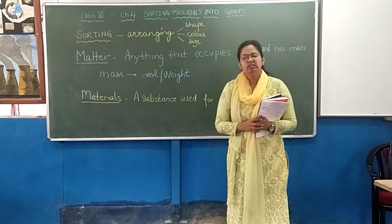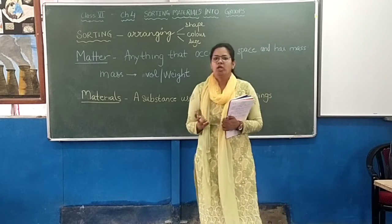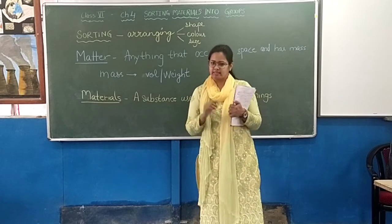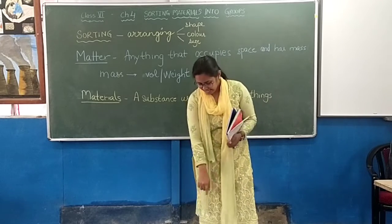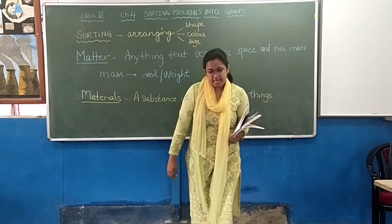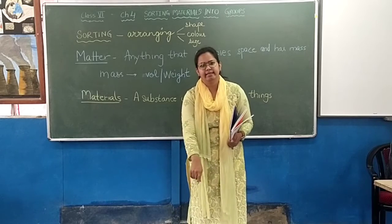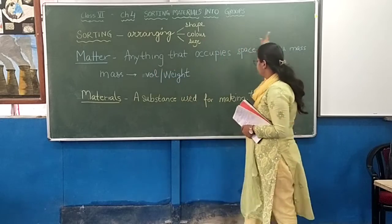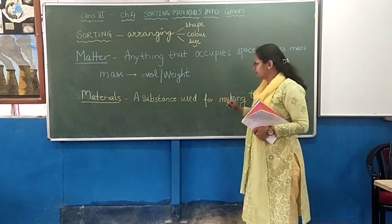And all these objects — what do they do? They occupy space. For example, the table here — yaha par table laghi hai — it is taking up space. Is blackboard ne yaha par space le rakhi hai. Every object around us is occupying space.